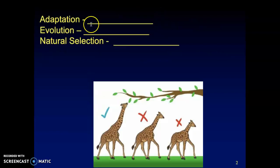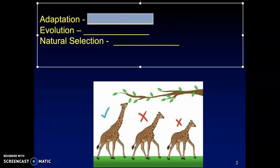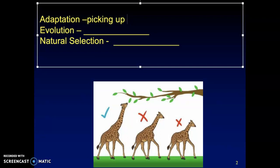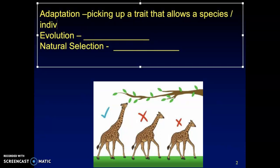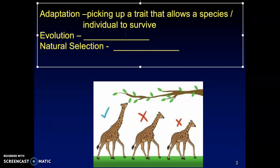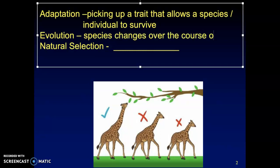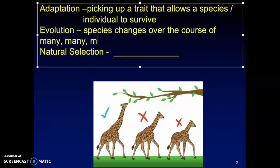Let's make sure you're comfortable with the difference here. Adaptation can be picking up a trait that allows a species — or even an individual — to survive. Because you picked up this trait doesn't mean you're going to evolve; it just helps you survive. But if it helps you survive, you're going to pass it on to your kids, and if it helps your kids survive, they'll pass it on. That's where we get into evolution — the species changes over the course of many, many, many generations.